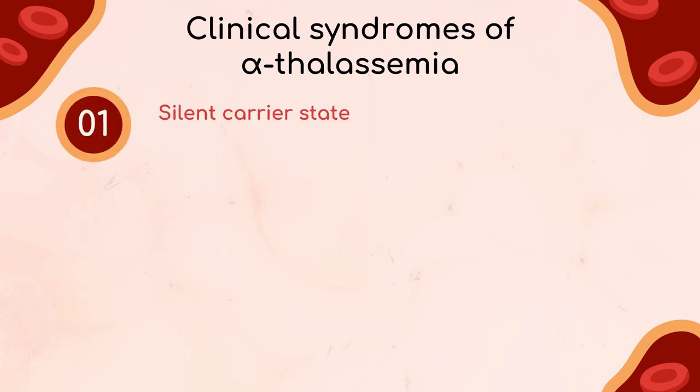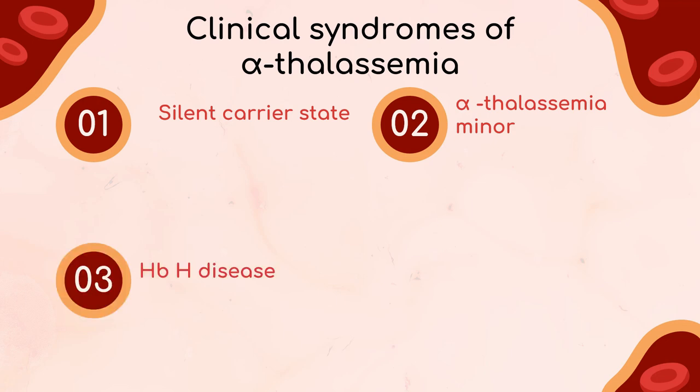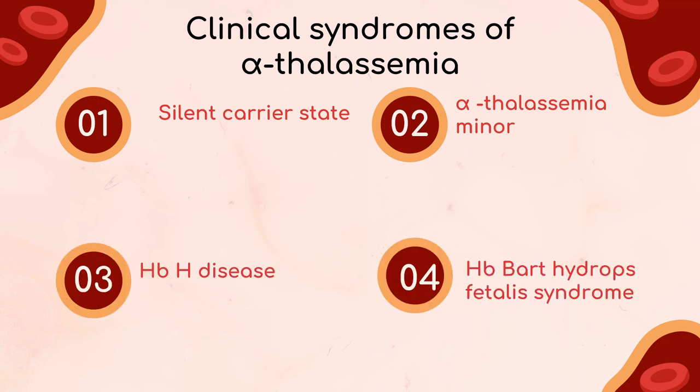The four clinical syndromes of alpha-thalassemia are: silent carrier state, alpha-thalassemia minor, hemoglobin H disease, and hemoglobin BART hydrops fetalis syndrome.